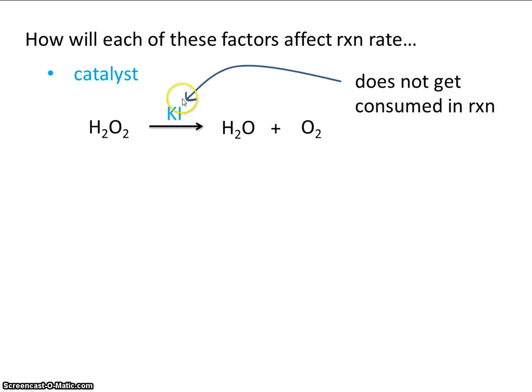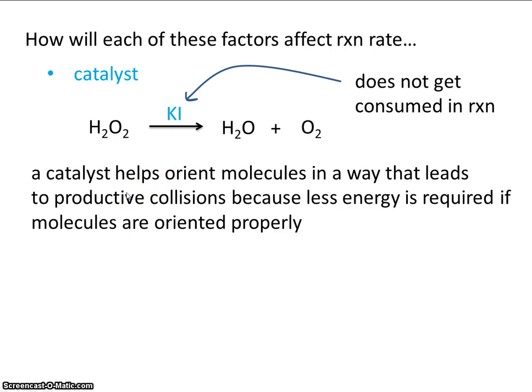Usually we write a catalyst above the reaction arrow. A catalyst helps orient molecules in a way that leads to productive collisions, because less energy is required if molecules are oriented properly. So for our sake, we'll say that potassium iodide helps to orient this decomposition reaction.